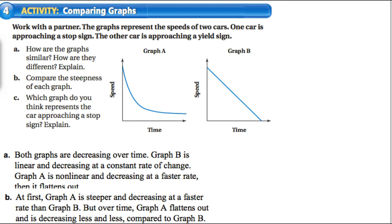Now comparing two graphs: one car approaching a stop sign, the other approaching a yield sign. At a stop sign you come to a complete stop, look both ways, then continue. At a yield sign you don't have to come to a complete stop — your tires can still be moving, you slow down and are prepared to stop if needed.